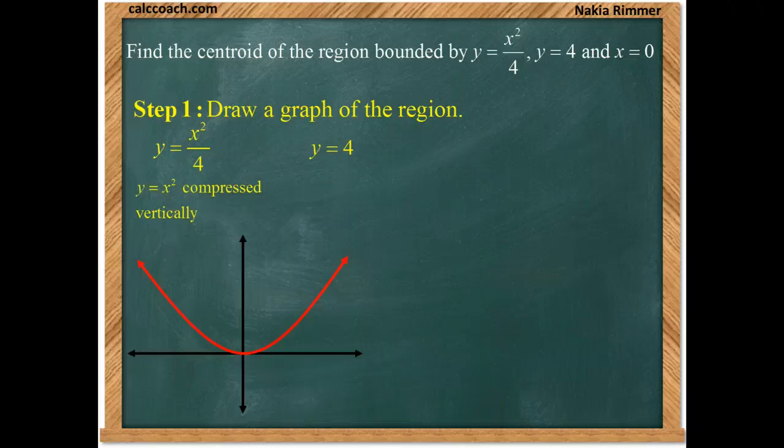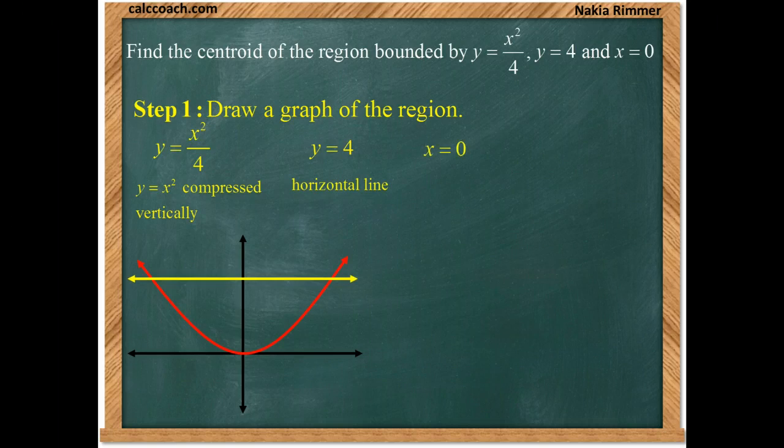The others are just lines, right? Y equals 4 is a horizontal line at 4. X equals 0, more commonly known as the y-axis.